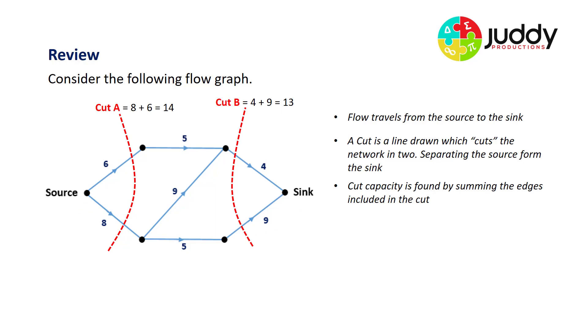Each cut has a capacity and it's simply the sum of the individual edges cut. So eight and a six would give me a cut capacity of 14 and a nine and a four will give me a cut capacity of 13. Please note this only works for edges flowing from the source to the sink. It doesn't work the other way around.